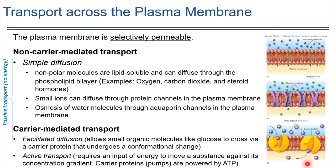Facilitated diffusion usually requires an input of energy, so we call this active transport, as opposed to passive transport. As we already know, in so many cases ATP is the energy carrier molecule that cells make use of. So a lot of these carrier proteins will directly use ATP, and we'll be seeing examples of that as we go forward.